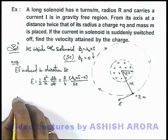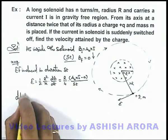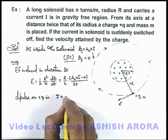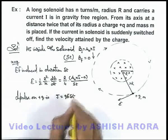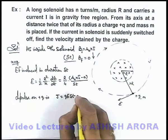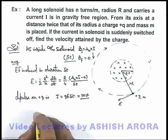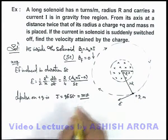So if this is the electric field which lasts for a duration Δt, then we can write impulse on +q is: impulse J equals qEΔt, and this will impart a velocity v. So momentum attained by the charge is mv.